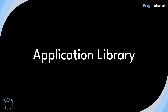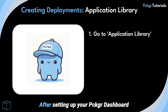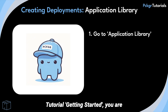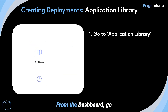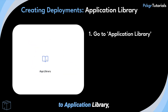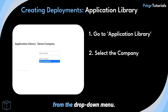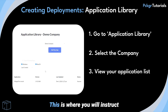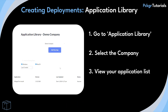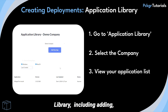Application Library. After setting up your Packager dashboard by following the steps in the Packager tutorial Getting Started, you are ready to create your deployments. From the dashboard, go to Application Library and select the company from the drop-down menu. This is where you will instruct Packager on which applications you want to be managed. All of your application management takes place in the application library.